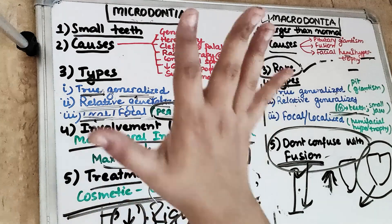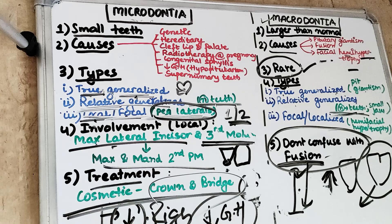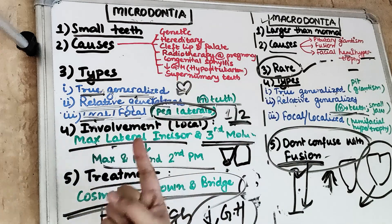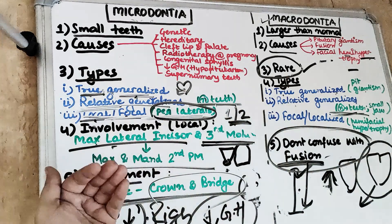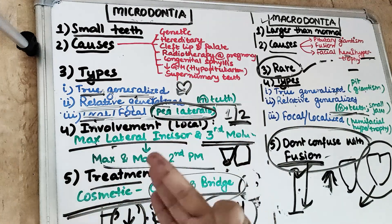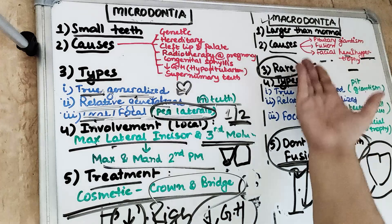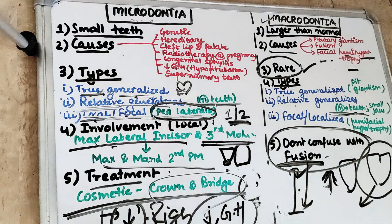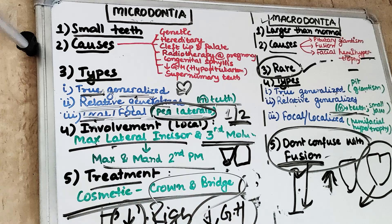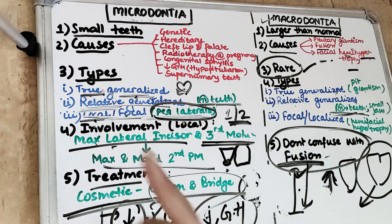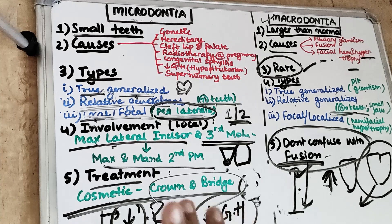So these are the five points — five minutes for microdontia, five minutes for macrodontia. Developmental anomalies of the teeth involving a disturbance in size can result in either small teeth (microdontia) or big teeth (macrodontia). The five points are: definition, causes, types, tooth involvement, and treatment. I hope you enjoyed the video. Give it a thumbs up and comment below. Keep reading, keep learning, stay safe, and I'll see you soon for the next video.